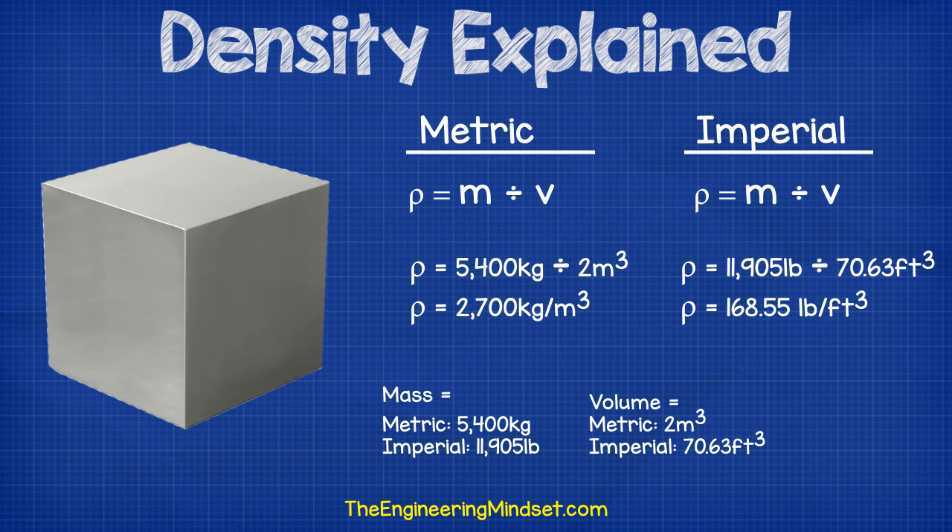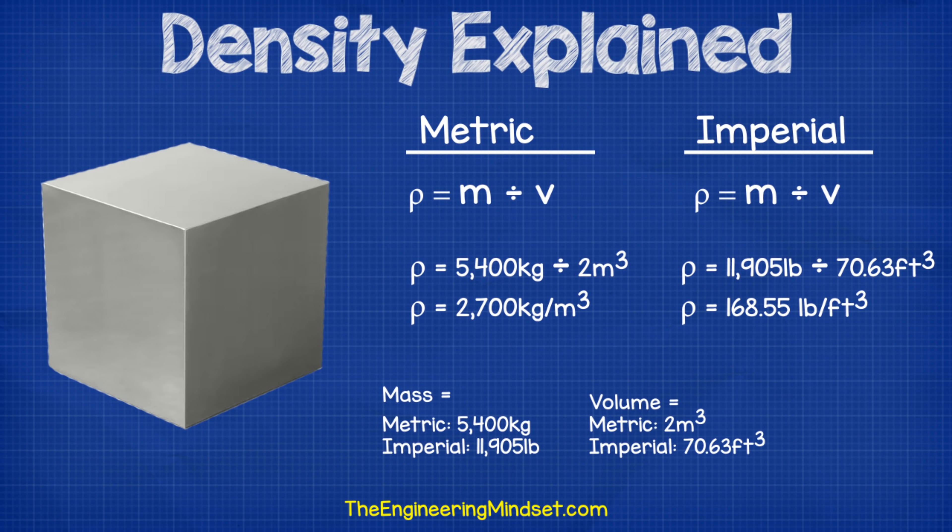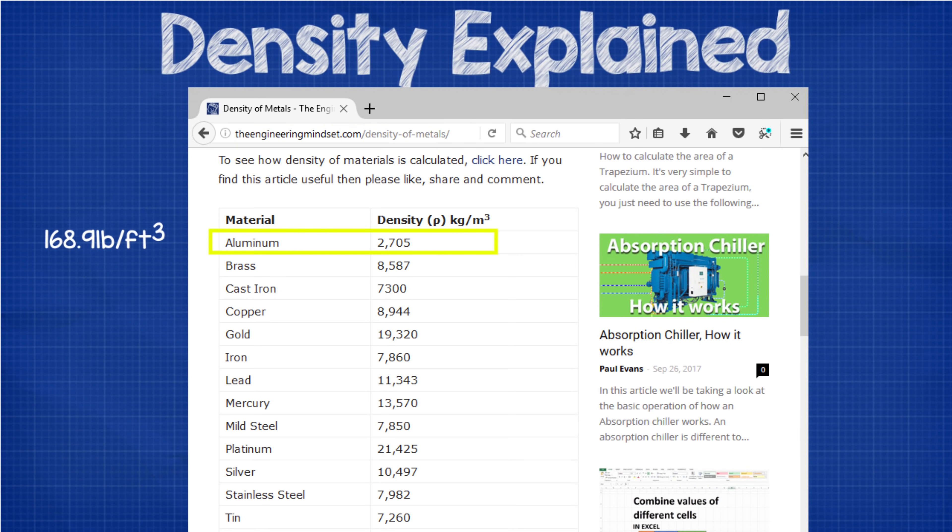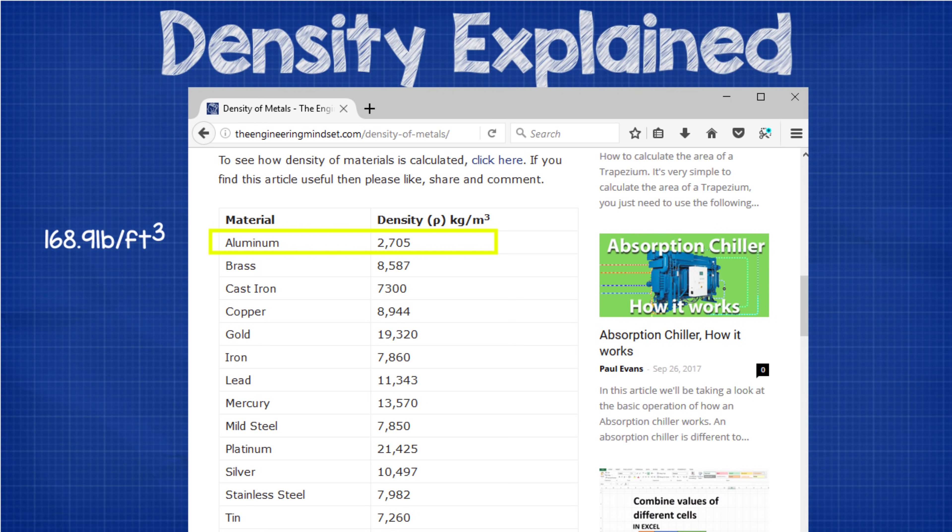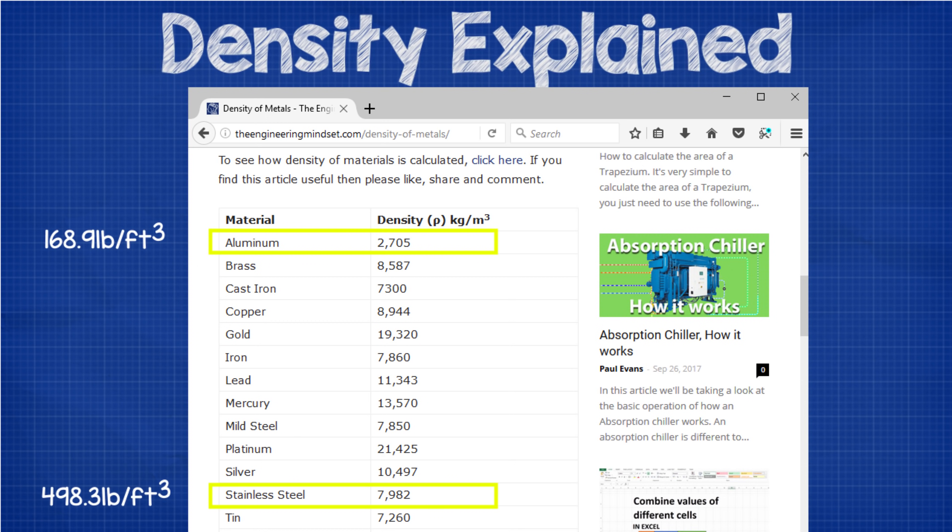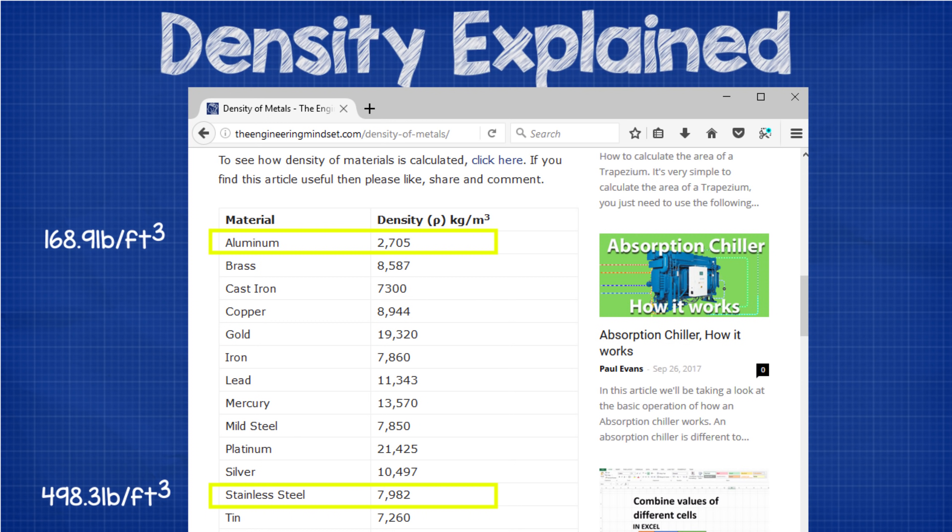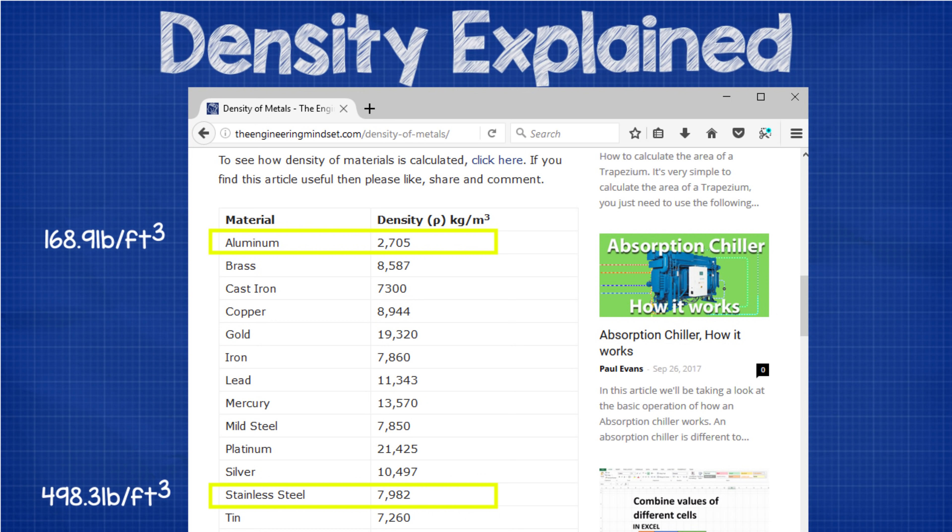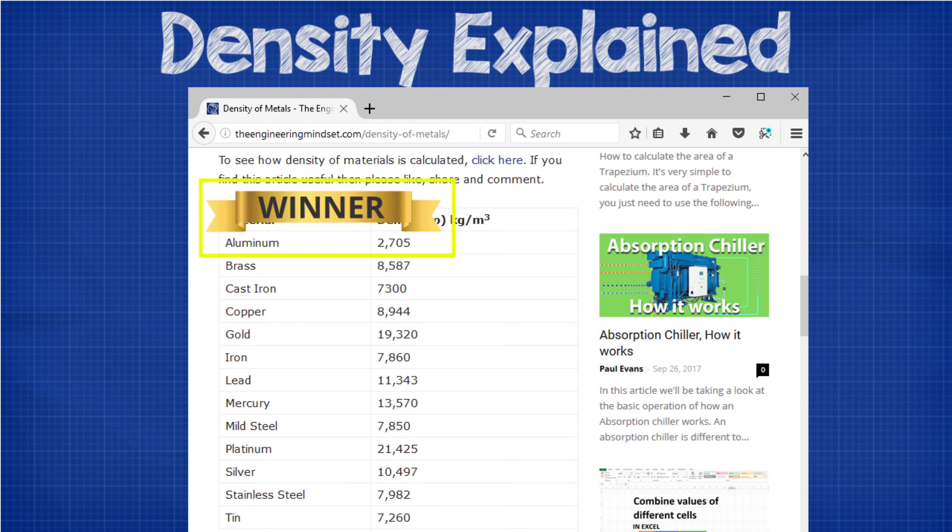Now if we look up the density of these two materials then we should see that aluminum has a density of approximately 2,705 kilograms per cubic meter, equivalent to 168.9 pounds per cubic feet. And stainless steel has a density of approximately 7,982 kilograms per cubic meter, equivalent to 498.3 pounds per cubic feet. So the block must therefore be made from aluminum.